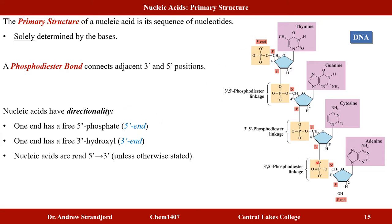There is directionality in the nucleic acid structure: a 5'-end and a 3'-end. Nucleic acids are named starting at the 5'-end, listing the nitrogenous bases in order down to the 3'-end. For example, a DNA sequence would be named thymine, guanine, cytosine, adenine — that is the primary structure of that nucleic acid.